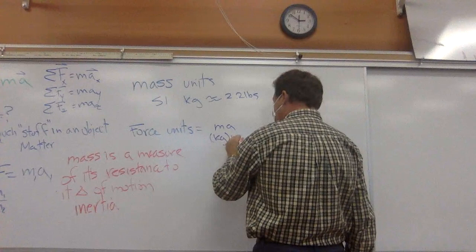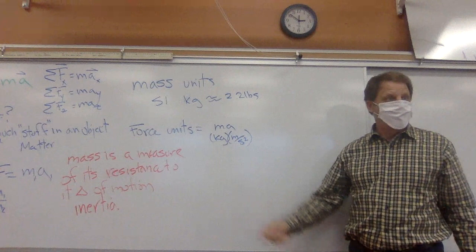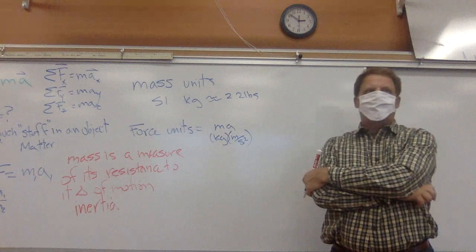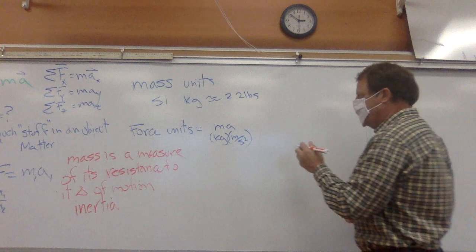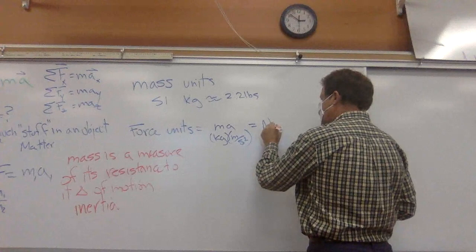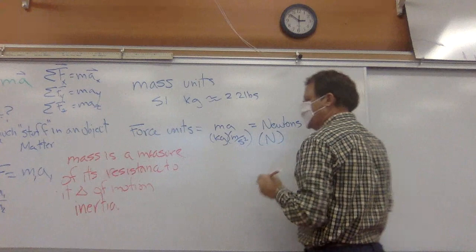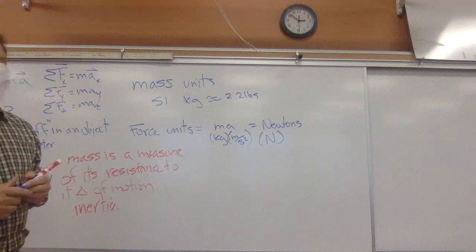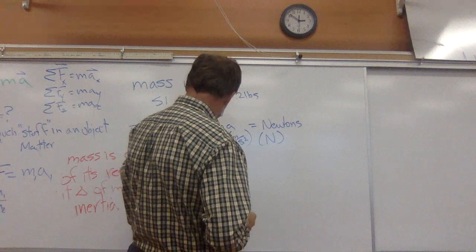Force units are Newtons. Since force equals ma, this is going to be kilogram meters per second squared. The base units for force are kilogram meters per second squared. If we went around talking about kilogram meters per second squared all the time, it would be really awkward, so force is measured in Newtons, abbreviated with a capital N.